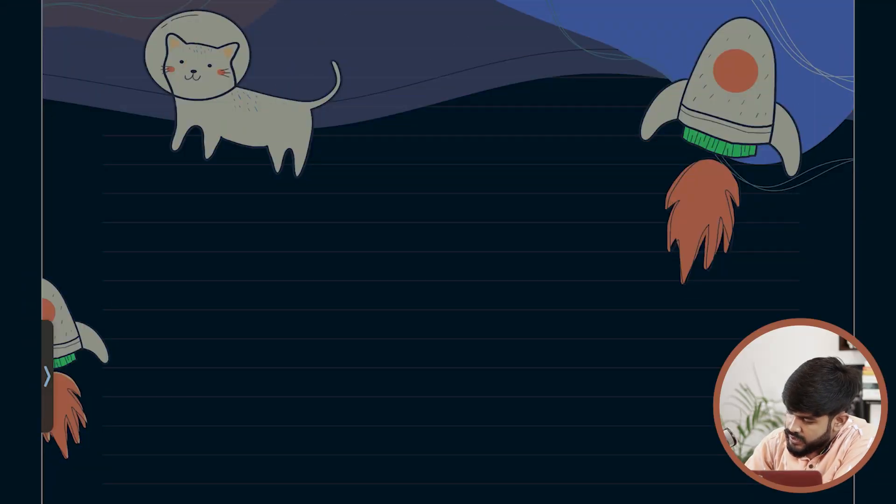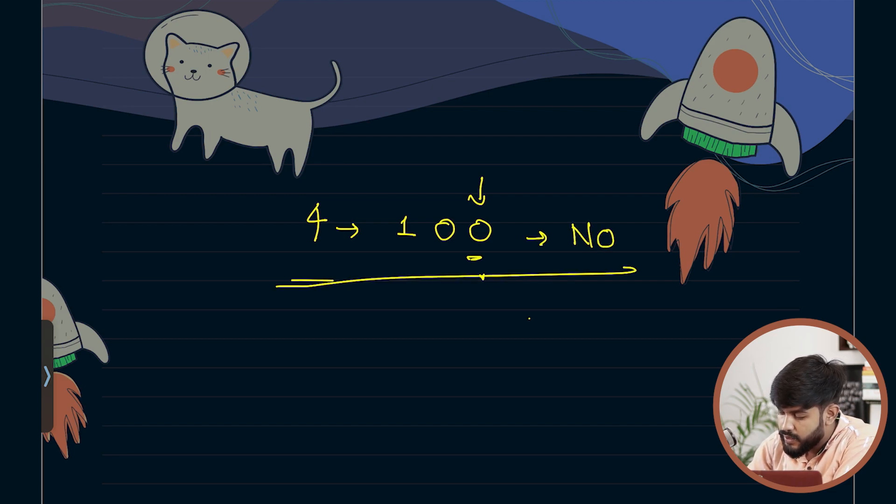Here it is told that the value is 4, so the binary representation of 4 is 100. If the 0th bit is set or not - no it is not set, that is why the value is no.